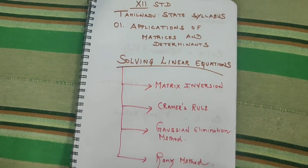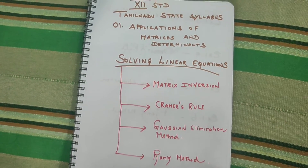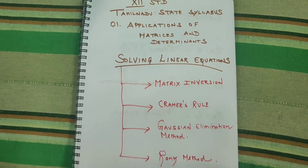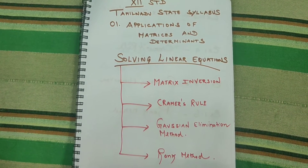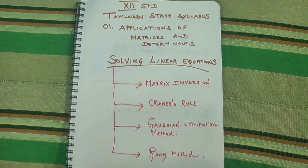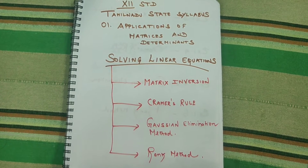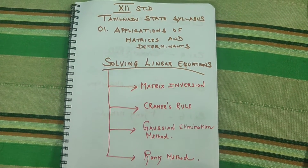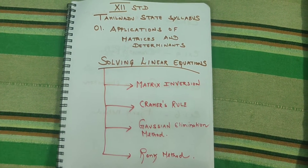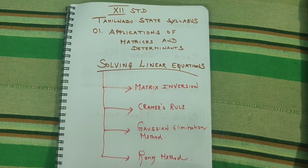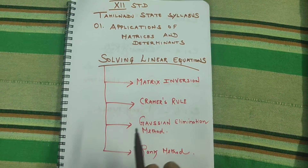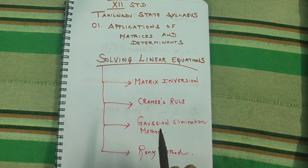In the 12th standard portion for Tamil Nadu, we have four models for solving linear equations: one is the matrix inversion model, one is Cramer's rule, one is the Gaussian elimination method, and one is the rank method. Using these four methods we can solve linear equations.